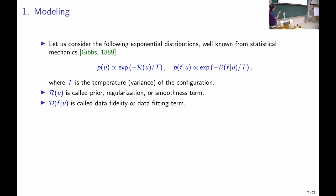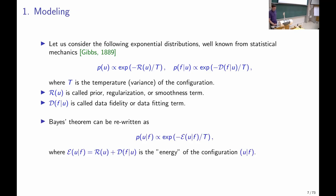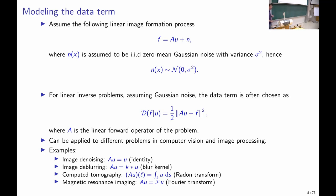These distributions are exponential of minus some energy, with a temperature parameter related to the variance. In the prior distribution, R(u) is called the regularization or smoothness term, and in the likelihood, D(f|u) is called the data fidelity or data fitting term. Writing Bayes' theorem basically means adding R plus D to get the energy of the complete distribution, which up to a normalization constant gives us the complete model.